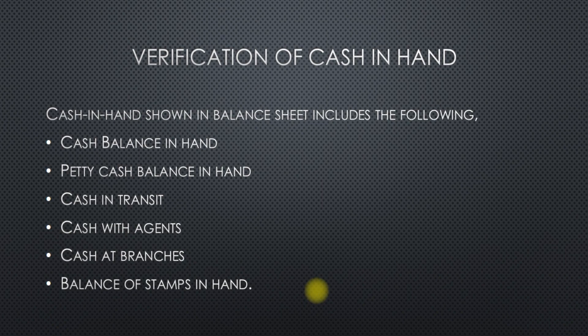Sometimes a certificate from management showing cash in hand is sufficient, but in the majority of cases it may not be enough. So the auditor should count, or should attempt, an on-the-spot counting of cash in hand at the last day of the accounting period. If there is any mismatch between the cash balance shown by the cash book and the actual cash on hand, the auditor should get a certificate from the cashier explaining the reasons for the difference.